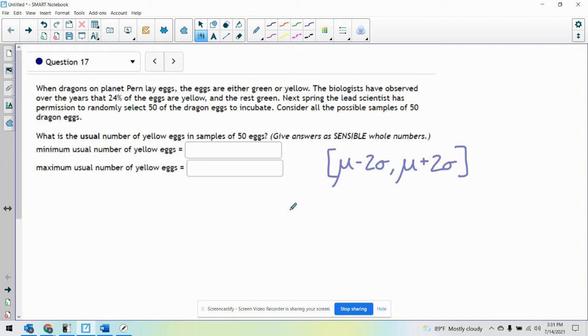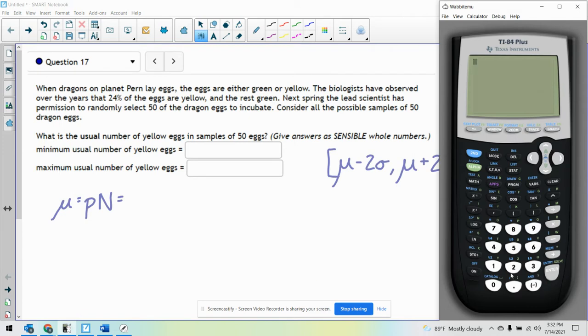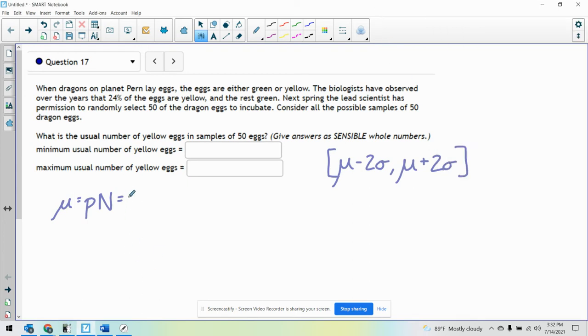Now mu here, it's not really mu because we're talking about a percentage here, a proportion. So this is really going to be P minus 2 sigma. It's going to be the percent of eggs that are yellow, which will be 24% of the 50. So mu, when talking about a binomial distribution, is P times N, which in this case is 24% times 50, which is 12. Just want to double check. 24% of 50. We get 12. So that's going to be our mu, 12.